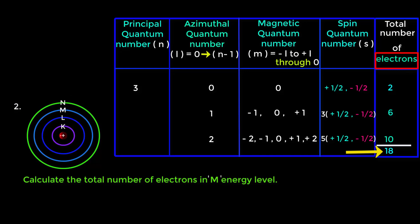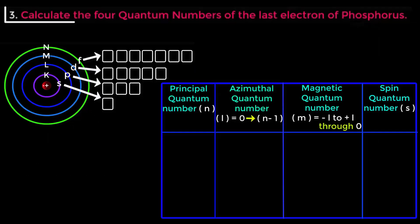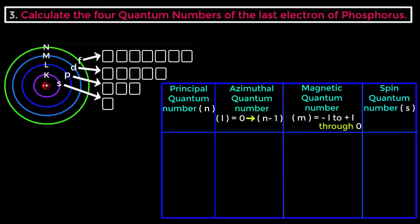Therefore we can say that the number of electrons in shell M is 18.